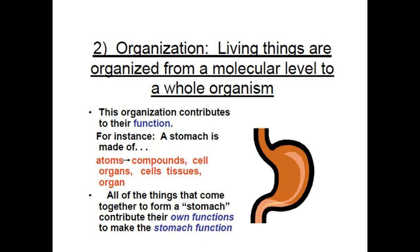The second characteristic is organization. Those cells, or that living thing, must be organized from the molecular level all the way up to the whole organism. The organization of a living thing contributes to its function — its job. If it's not organized properly, it cannot do its job. For example, the stomach digests your food and is organized from the atoms that make it up, to compounds, to cell organelles inside a cell, to cell tissues, and the tissues make up the organ itself. All the things that come together to form your stomach contribute their own functions to make the stomach function.